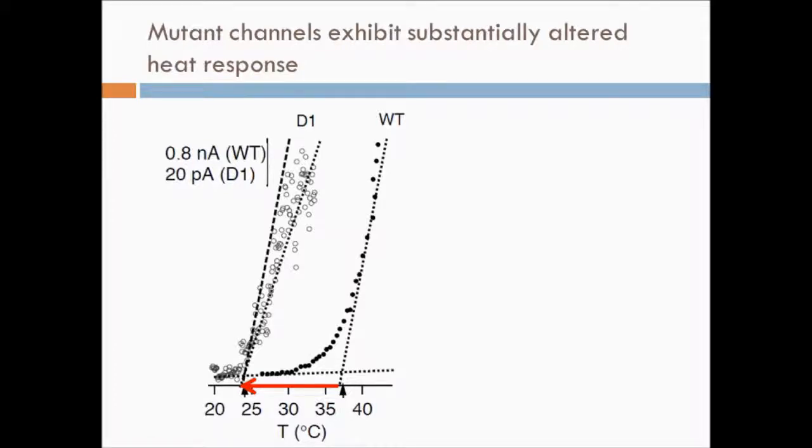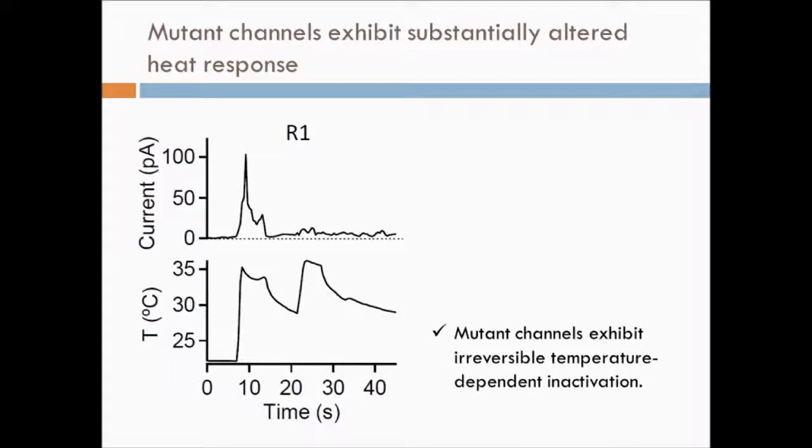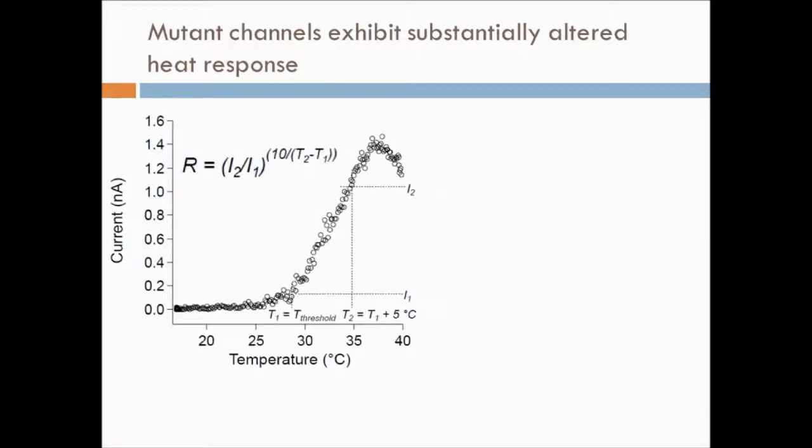This suggests that the dynamic range of heat activation is altered by the turret mutations. Interestingly, turret mutant channels showed heat-induced, rapid, irreversible inactivation. This inactivation process can be seen in the wild-type at high temperatures, but becomes more prominent in the mutant channels and occurs at much lower temperatures.